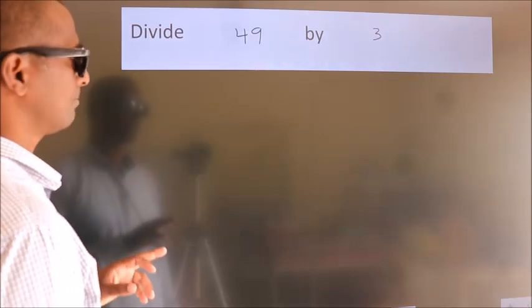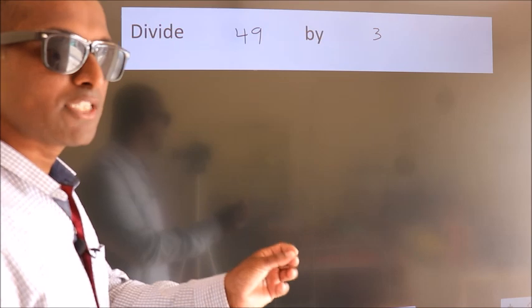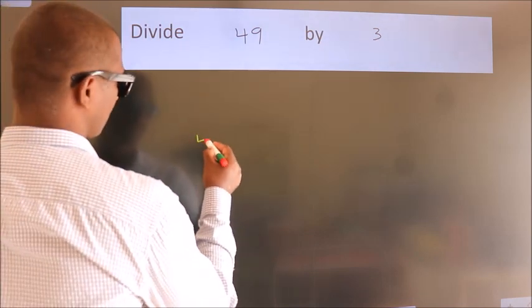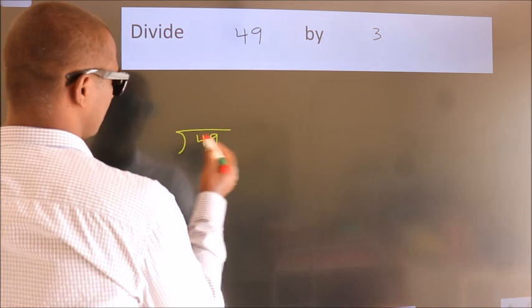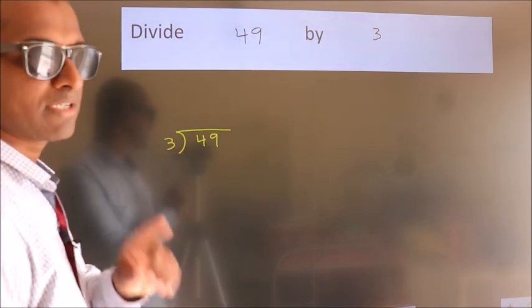Divide 49 by 3. To do this division, we should frame it in this way. 49 here, 3 here. This is your step 1.